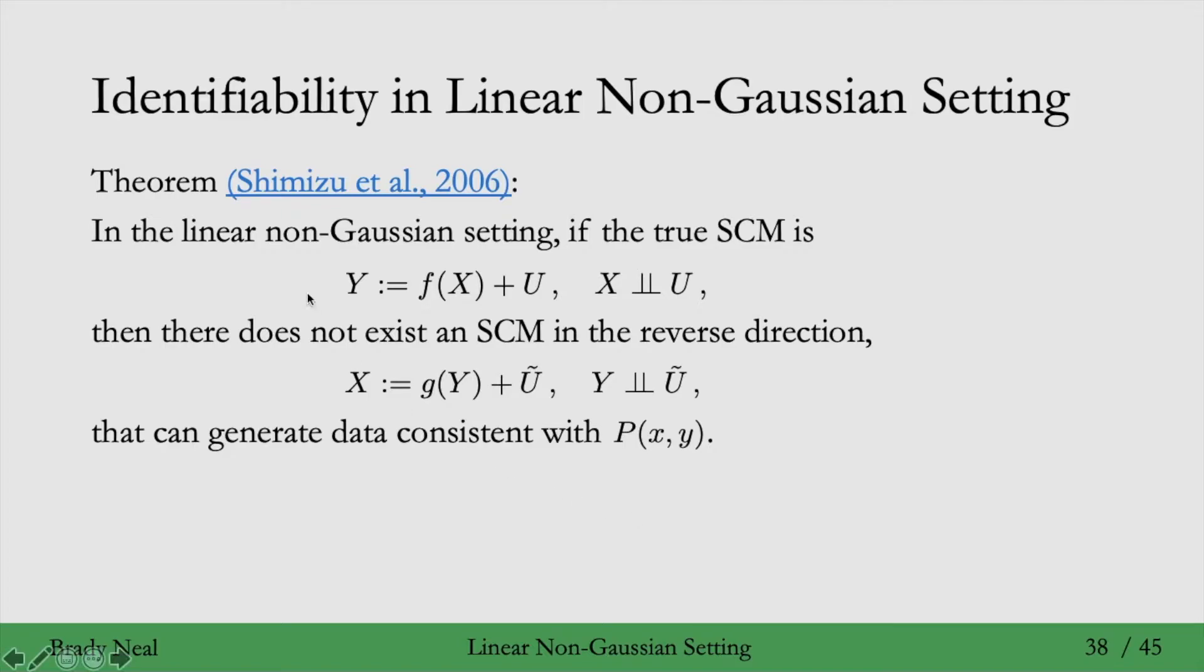It's saying that in the linear non-Gaussian setting, if the true SCM is this one where Y is generated from X, then there does not exist an SCM in the reverse direction where X is generated from Y, where Y and this Ũ are independent. There doesn't exist such an SCM in the reverse direction that can generate the data consistent with the observational distribution.